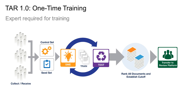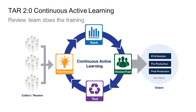But many of us started asking the question, why do you just do one round of training? You've got all these reviewers reviewing documents — 10,000, 20, 50,000 — as this process goes. Why wouldn't you take advantage of their tags as well to make the algorithm smarter? And that was the essence of the continuous active learning revolution, which is a big part of TAR 2.0.